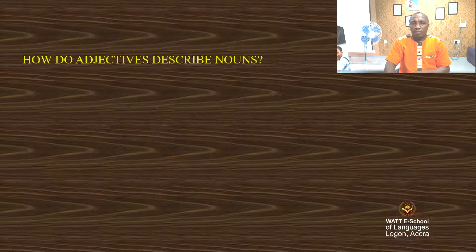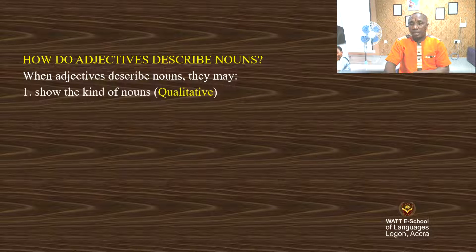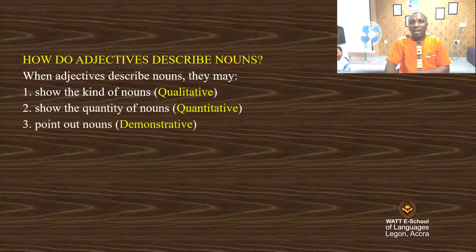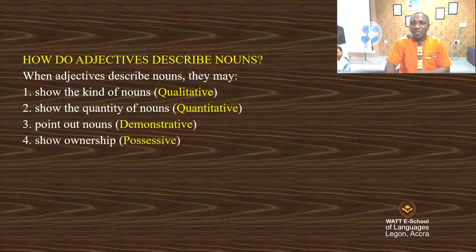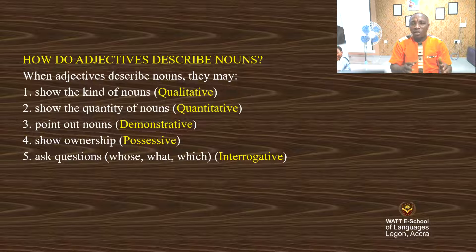So let's conclude. How do adjectives describe nouns? Adjectives describe nouns by: showing the kind of noun — qualitative adjective; showing the quantity of noun — quantitative adjective; pointing out nouns — demonstrative adjective; showing ownership — possessive adjective; and by asking questions: whose, what, which — interrogative adjective. In conclusion, we have five categories of adjectives, as you can see on your screen.